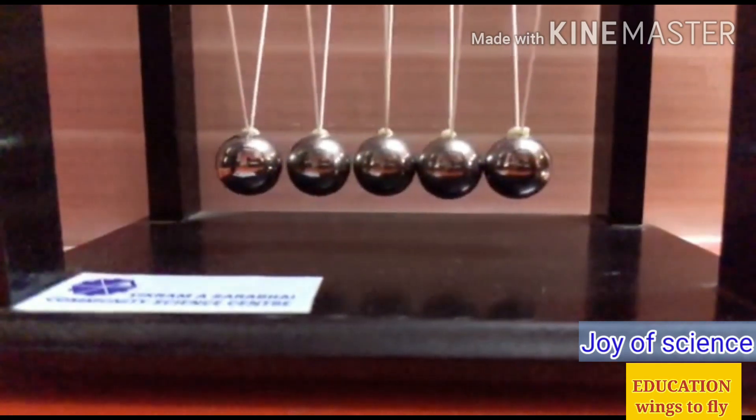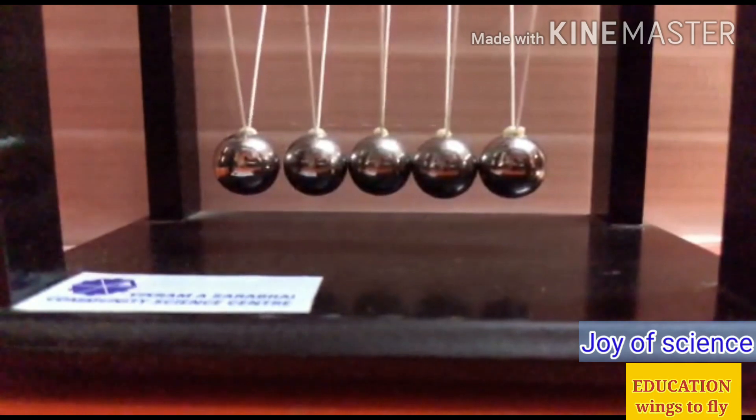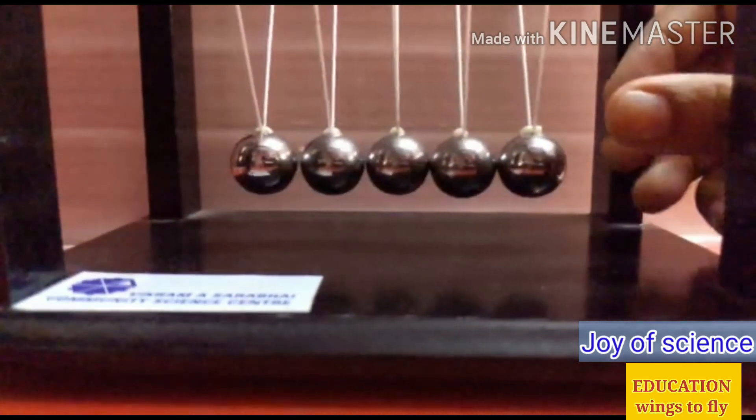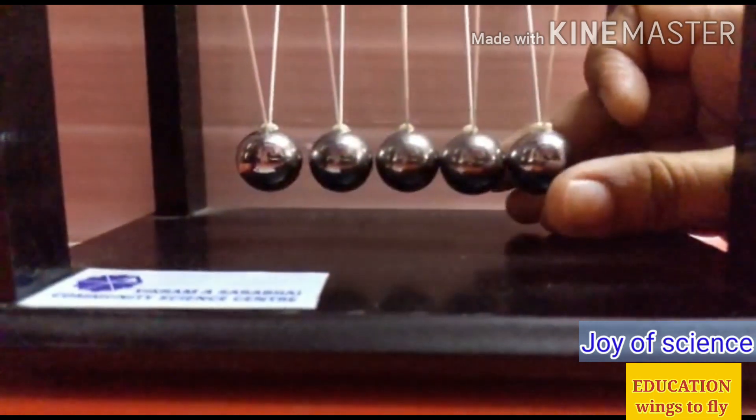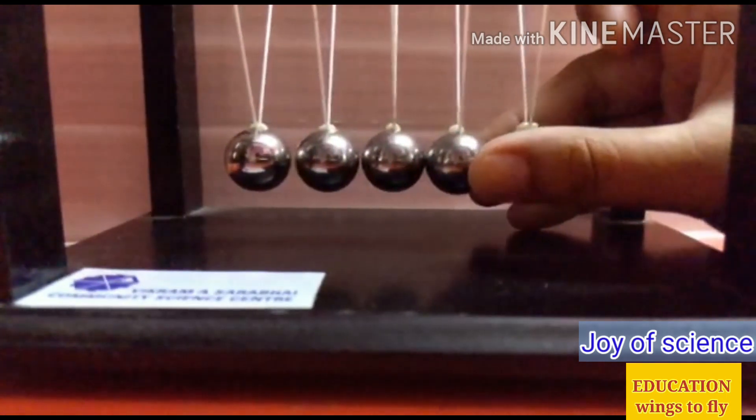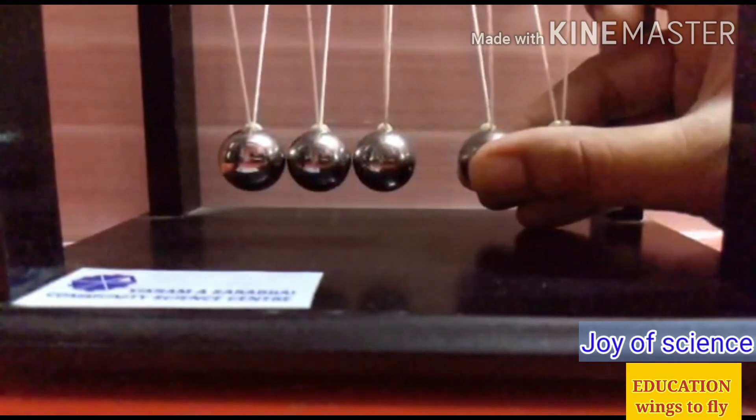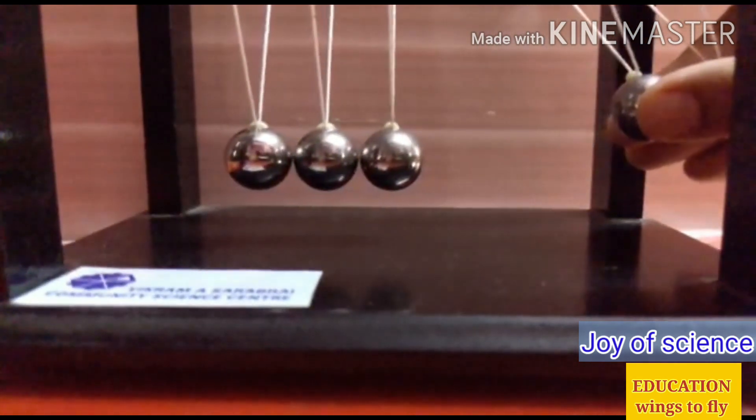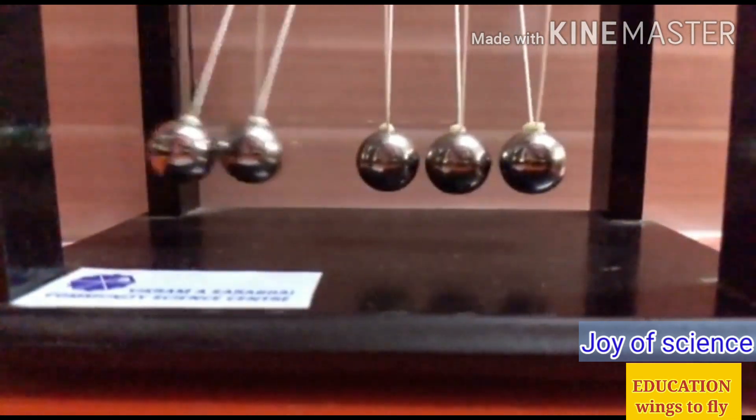Like this, if I take two balls from the right-hand side, then on the left-hand side only two balls will come out. So let's see how does it happen. Now I am going to take two balls and release them from the right-hand side. So now observe it carefully on the left-hand side what happens. Only the two balls are coming out.